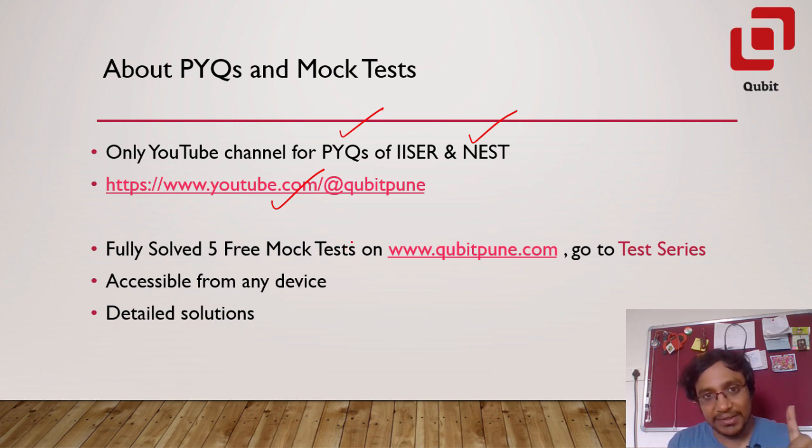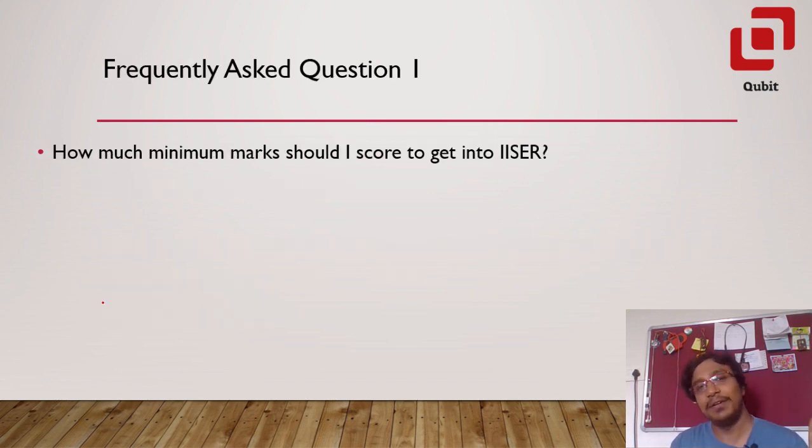In addition to the previous year's questions, we're also offering five free mock tests which can be accessed from any device including your laptop, mobile, iPhones, desktops, everything. To sign up for these five mock tests, you have to go to our website www.qubitpune.com and then select test series. You will be redirected to the sign up page. Once you complete any of these five tests, you will get to see the detailed solutions to that particular test which will be accessible till the actual IISER aptitude test 2023. Let's now go to our first frequently asked question.